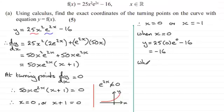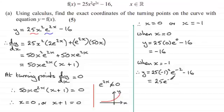And we'll take the other value when x equals minus 1. When x equals minus 1, we've therefore got y equals 25 multiplied with minus 1 squared. And then you've got e to the power 2 times minus 1, which is minus 2. And then you've got your minus 16. So that means minus 1 squared is 1, so we get 25 e to the power minus 2, and then minus 16. So therefore,